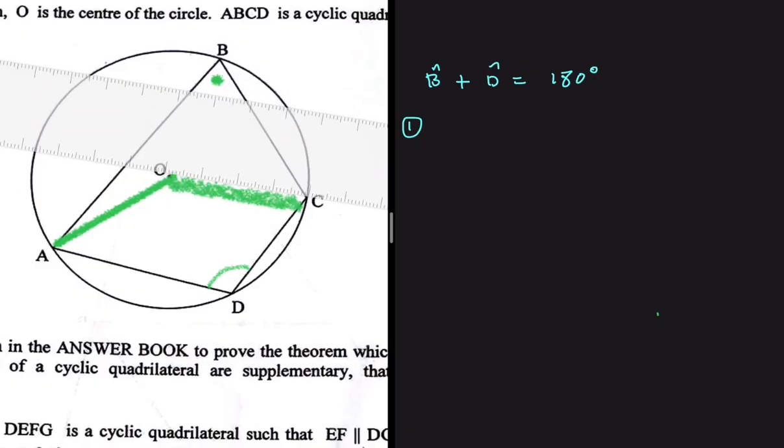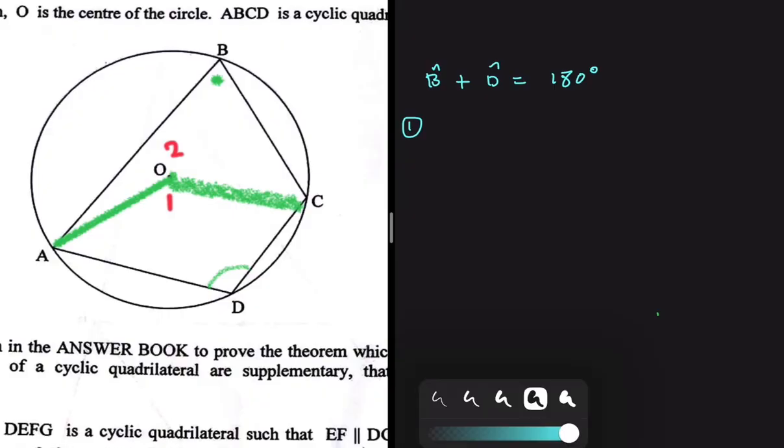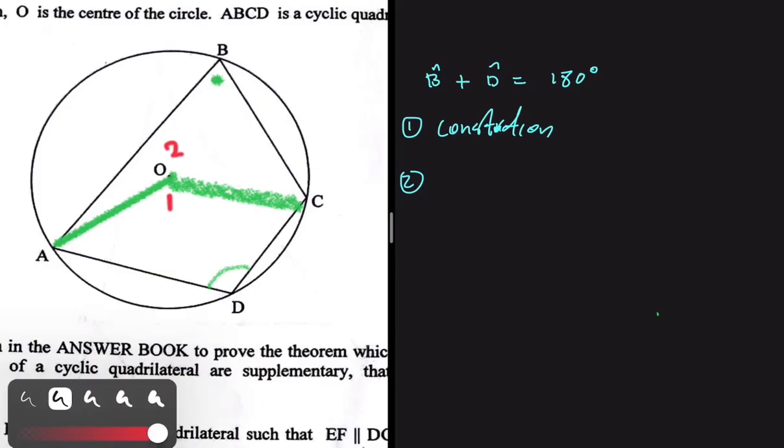We have done the first step which is making a construction. We can say we have O1 here and then we have O2. From the theorem, step number one is construction, and then we have a theorem that says that the angle at the center is twice the angle at the circumference. So this angle O1 should be twice angle B.